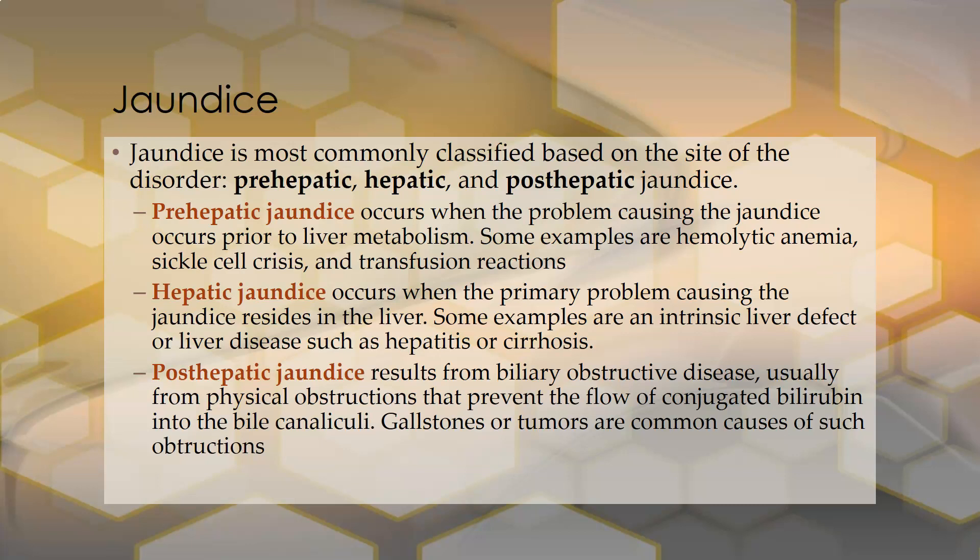Hepatic jaundice occurs when the primary problem causing the jaundice resides in the liver. Examples include any intrinsic liver defect, genetic conditions, or liver diseases such as hepatitis or cirrhosis regardless of the cause. The problem is that the hepatocytes are usually being destroyed or harmed, so they have difficulty handling even a normal load of bilirubin from normal red cell metabolism, causing it to back up and produce jaundice.